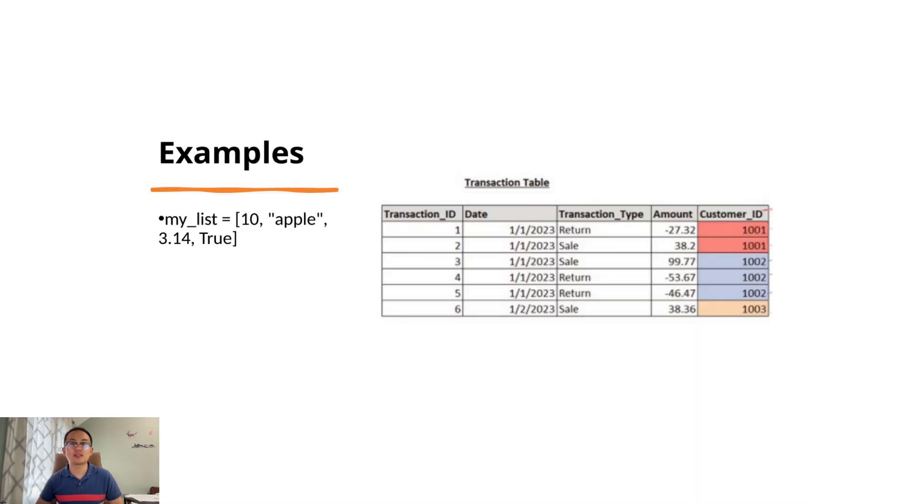Let me show you an example. Here's a table that tracks sales transactions. It has columns for things like transaction ID, date, and transaction type. Each row represents a single transaction. And here's an example of a list named MyList. It includes a few different types of data: the number 10, an integer; the word apple, a string; the number 3.14, a float; and the boolean value true. That's the beauty of a list. It can hold different types of values in one container.